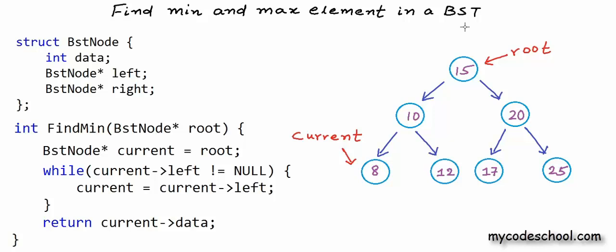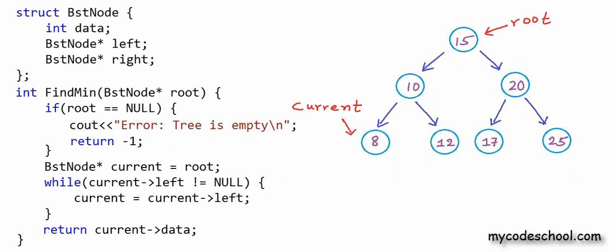There is one case that we are missing in this function. If the tree is empty, we can throw some error. We can return some value indicative of empty tree. If I know that the tree would have only positive values, I can return something like minus 1. So here in my function I have added this condition: if root is equal to null, that is if the tree is empty, print this error and return minus 1.